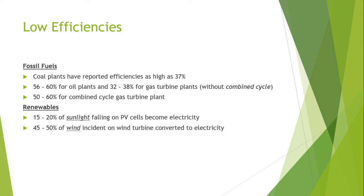On the other hand, the efficiencies of renewable energy sources used to generate electricity are significantly lower. For example, for photovoltaic systems that use sunlight to form electricity using the photovoltaic effect, the efficiency is reported to be about 15 to 20 percent. There are also other factors that contribute to lower efficiency rates, like the changing intensity of solar light throughout the day.